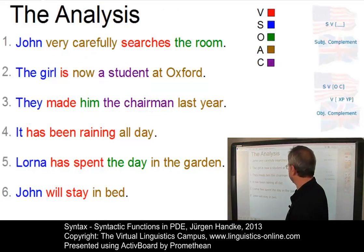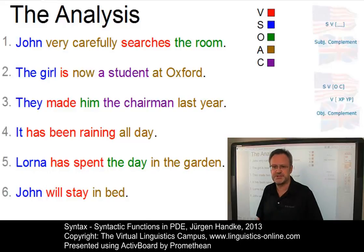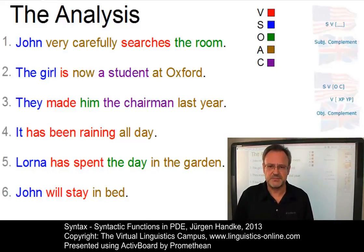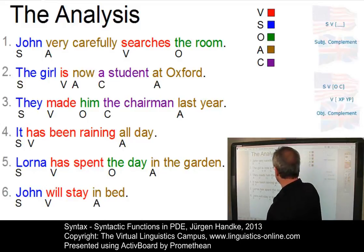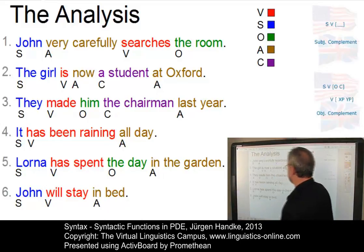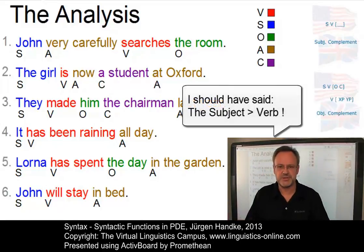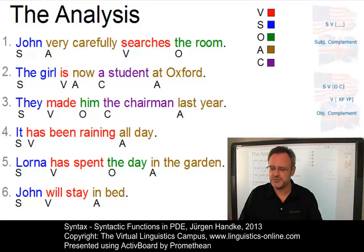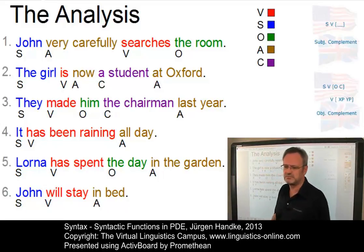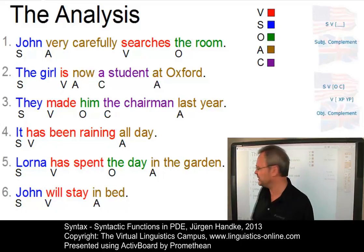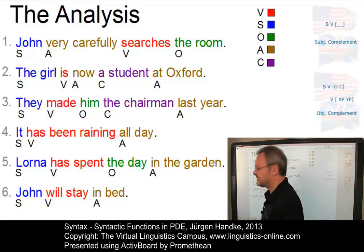Here is the result of our analysis. Now you see all the elements represented in their appropriate colors: subject, verb, object, adverbial, and complement. If we make the functional elements visible by means of their names, you see that in each case the subject precedes the object. In present-day English, we clearly have an SVO structure in declarative sentences, and whenever there is an object — like in number one — the object follows the verb. Sometimes we may have an adverbial in between, like in number one where very carefully occurs between the subject and the verb.